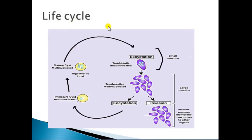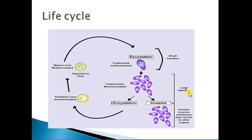The life cycle of Entamoeba histolytica starts with ingestion of mature cysts. When someone consumes contaminated food or water, these cysts enter the stomach through the oral route and ultimately reach the small intestine. In the small intestine, excystation of the mature cysts occurs, leading to the formation of trophozoites. When these trophozoites are released, they are multinucleated. With maturation, they are converted into mononucleated trophozoites, which are then present in the large intestine.